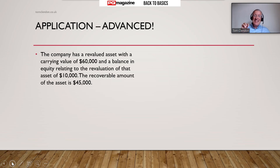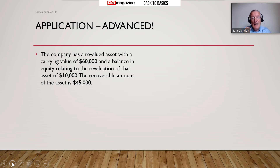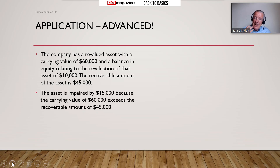Life can get complicated in accounting, but double entry is a beautiful way of simplifying and summarizing. Let's think about IAS 36 and impairment reviews on previously revalued assets. We've got an asset with a carrying value of £60,000; it's been revalued in the past and sitting in equity is a revaluation reserve of £10,000; and the recoverable amount is £45,000. The first thing to acknowledge is that there's an impairment loss of £15,000, because the carrying value exceeds the recoverable amount - the figure in the books is £60,000 but you can only get back £45,000.